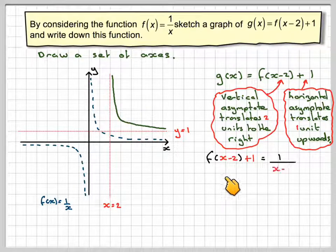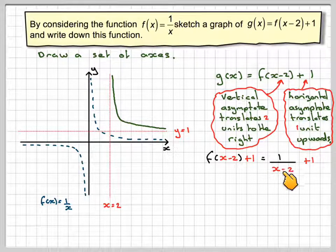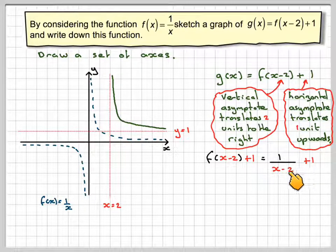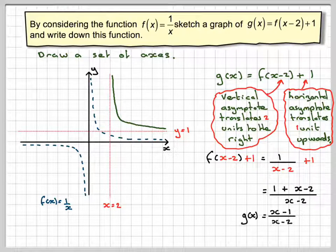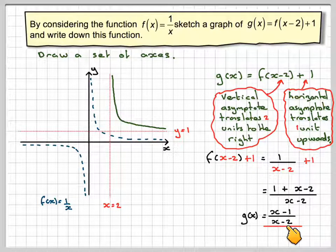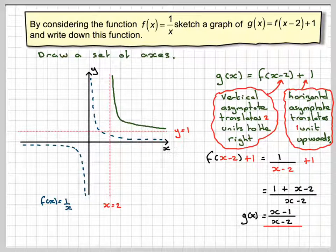So we've got f of x minus 2 plus 1 means 1 over x, so 1 over x minus 2 plus 1. To put that over a common denominator, that will be 1 plus x minus 2 over x minus 2. 1 minus 2 gives me minus 1, so I get g of x is x minus 1 over x minus 2. So I've actually written down the function.